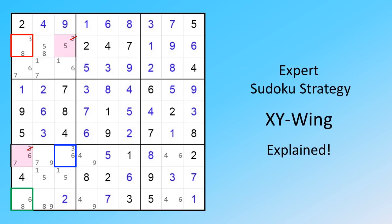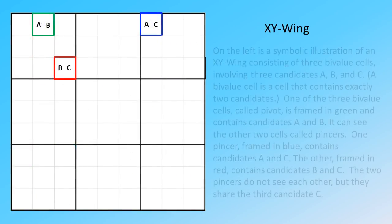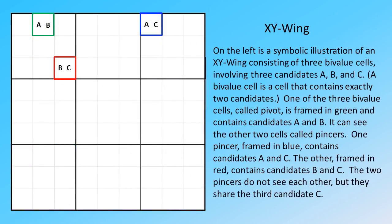On the left is a symbolic illustration of an XY-Wing consisting of three bivalue cells involving three candidates A, B, and C. A bivalue cell is a cell that contains exactly two candidates. One of the three bivalue cells, called pivot, is framed in green and contains candidates A and B. It can see the other two cells called pincers.